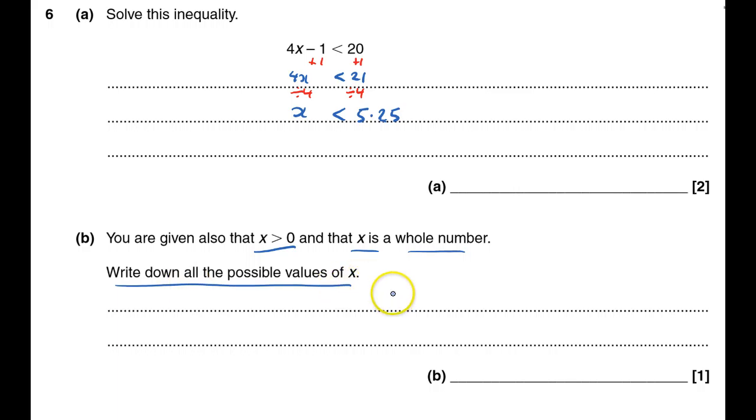Write down all the possible values. It could be 1, 2, 3, 4, and it could be 5. There are the possible values. That's question 6 done.